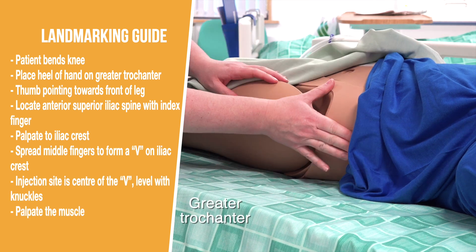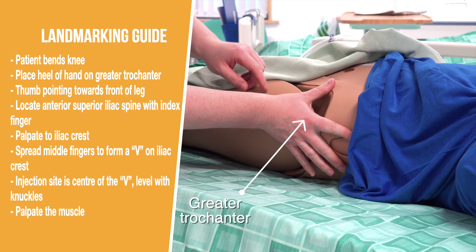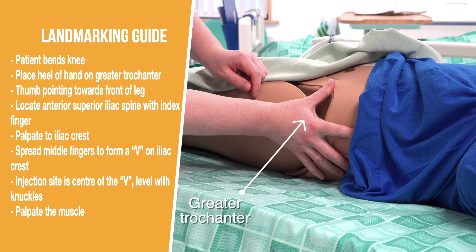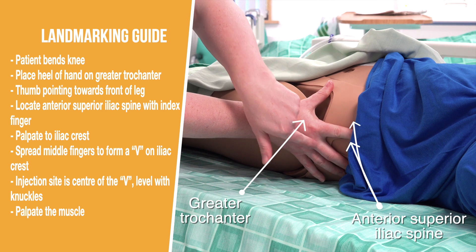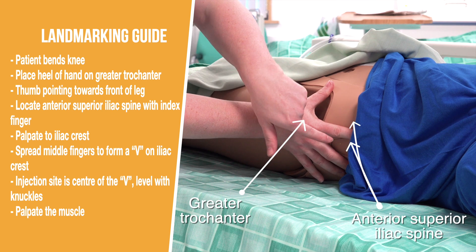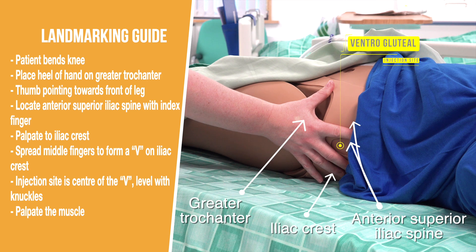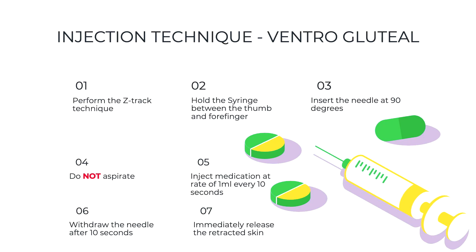Ask the patient to bend their knee to locate the greater trochanter. Place the heel of your opposite hand on it, palm pointing forward. Use your index finger to find the anterior superior iliac spine, then trace up to the iliac crest. Spread your middle finger to form a V. The injection site is in the center of the V, level with your knuckles. Visualize the site and palpate the muscle.